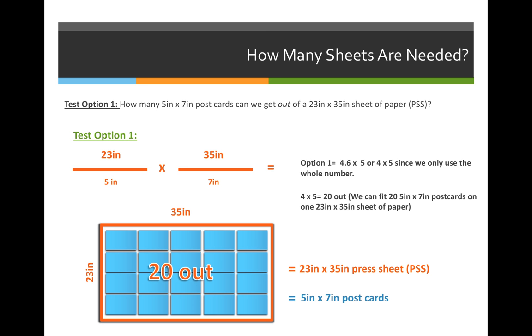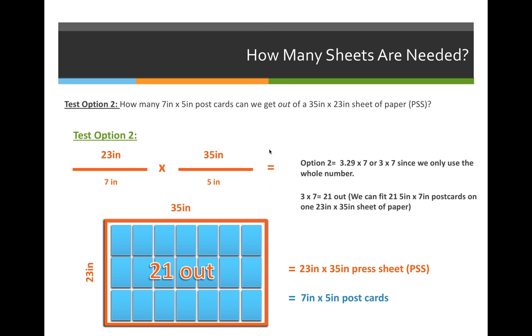The reason that we always have to do the option 1 and option 2 scenario is because these postcards are running horizontally. What if I wanted to rotate them and run them vertically? Our option 2 scenario, we're going to take our sheet of paper, which is still 23 by 35 inches wide, and leave that as the formula as is, and then this time we're going to rotate the bottom or switch the bottom values. So we're going to put the 7 inch part of the postcard along the 23 inch side of the paper, and the 5 inch side of the postcard along the 35 inch side of the paper.